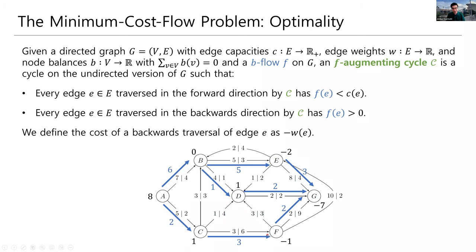So, here, if you look at this example b-flow, which is what we had on the last slide, then this here is an f-augmenting cycle. Let's just quickly look at that cycle. Let's say it starts at A. We see that it's going forward from A to C. Why is that? Well, because 2 flow is strictly less than 5, so we are allowed to go forwards there. Likewise, we're allowed to go forwards from C to D because there's 0 flow, which is strictly less than the capacity of 1.